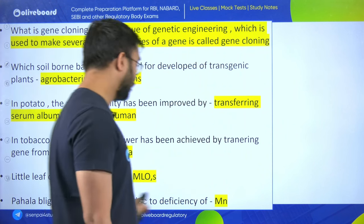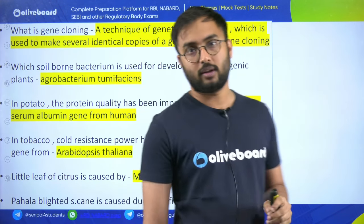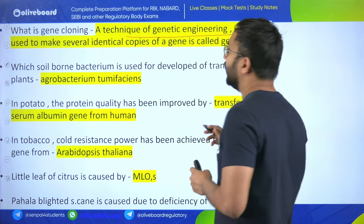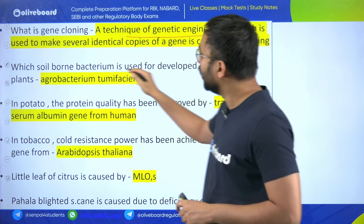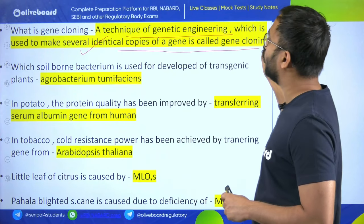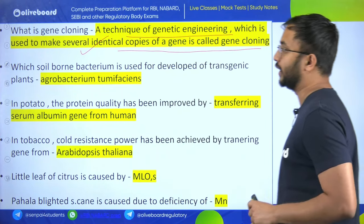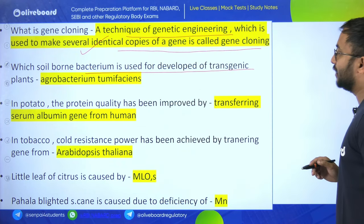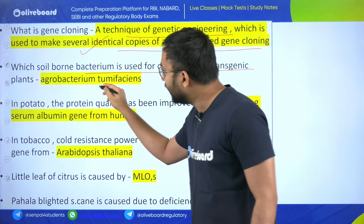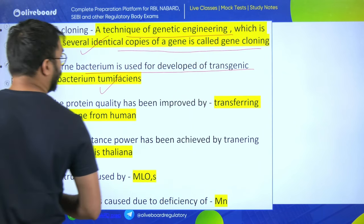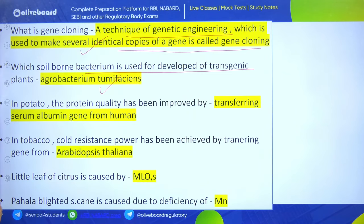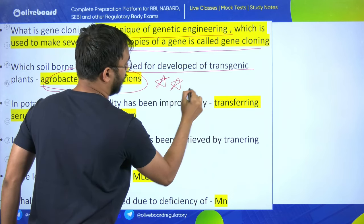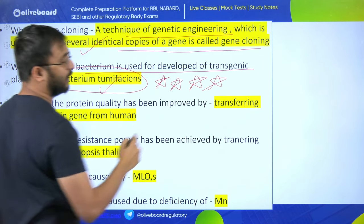Gene cloning is a technique of genetic engineering used to make several identical copies of a gene. The soil-born bacterium used to develop transgenic plants is Agrobacterium tumefaciens - very important, this is a star question and a previous AFO question. In 2017, Agrobacterium tumefaciens appeared in the options of an AFO exam question.